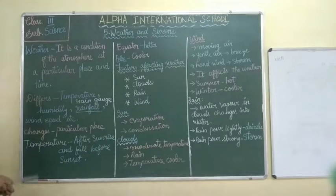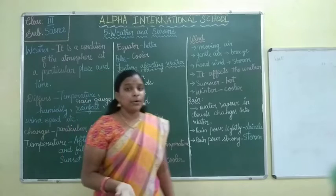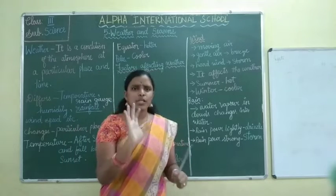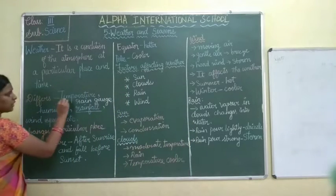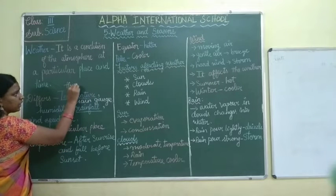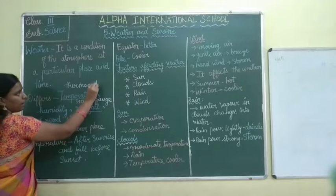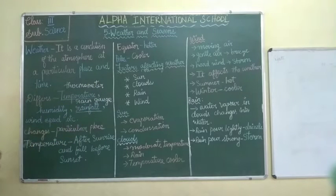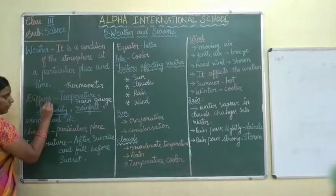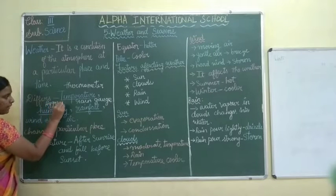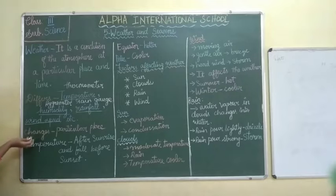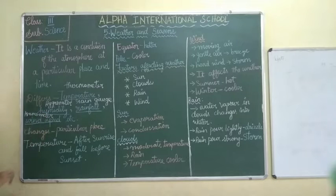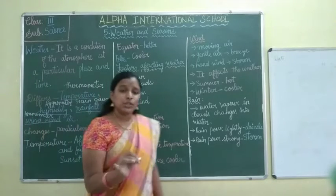Then there is wind speed. This also can be measured. Each one will have an instrument to measure. For example, temperature is measured by thermometer. Humidity is measured by hydrometer. Wind speed is measured by anemometer. Each one will be having an instrument to measure.